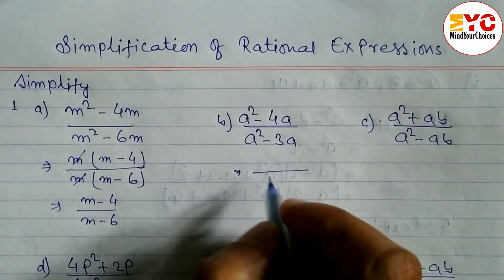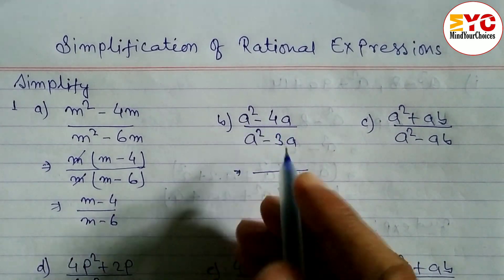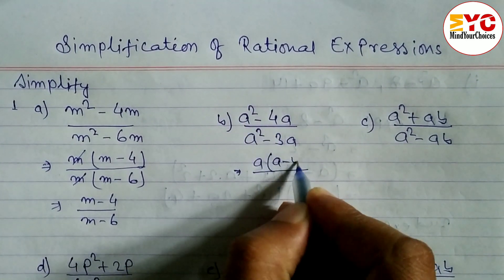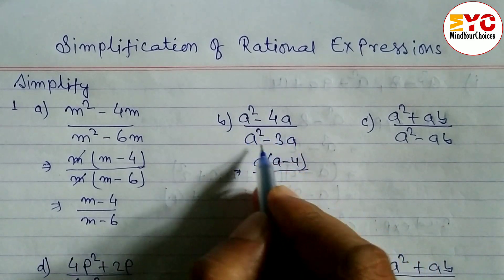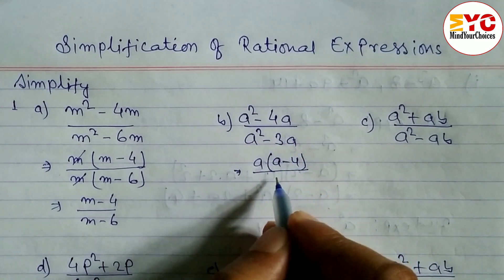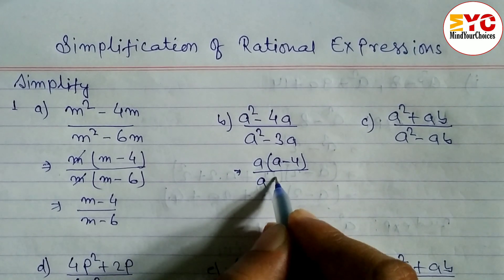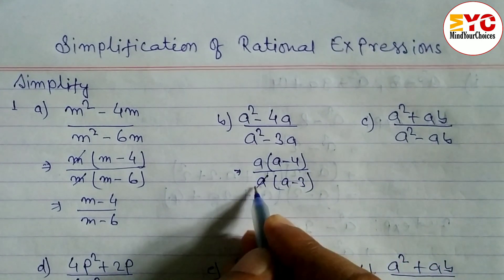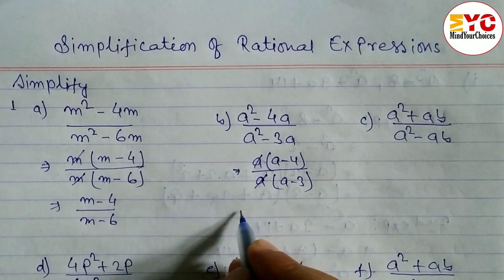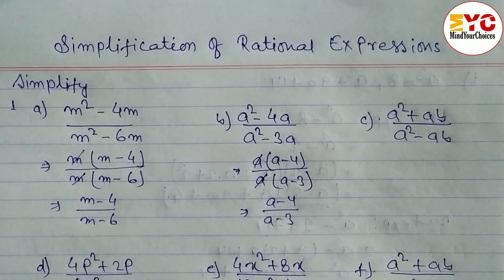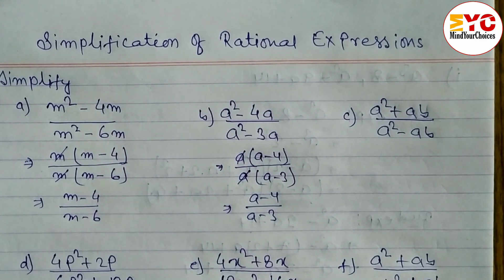Now look at the next question. In the numerator we have a squared minus 4a, so we take a common, leaving a minus 4. Similarly in the denominator, a squared minus 3a — we take a common, leaving a minus 3. Again, a and a cancel, so the answer is a minus 4 over a minus 3.